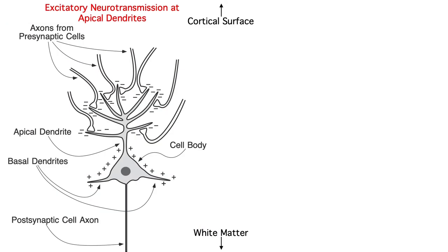If an excitatory neurotransmitter like glutamate is released at the apical dendrites of a pyramidal cell, this will lead to the flow of positively charged ions into the dendrites, creating a net negativity outside the dendrites. Any electrical circuit needs to be completed, so you'll get a net positivity near the cell body. Together, the negatives and positives create a small electrical dipole.